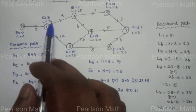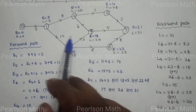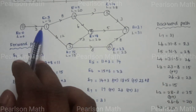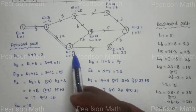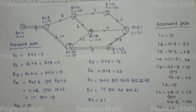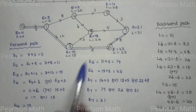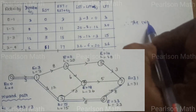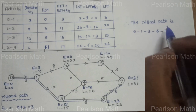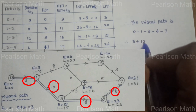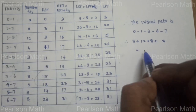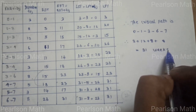Now let's look at the critical path. The critical path occurs where E equals L at each node: E0 equals L0 equals 0, E1 equals L1 equals 3, E3 equals L3 equals 15, E6 equals L6 equals 23, E7 equals L7 equals 31. So the critical path is 0 to 1, 1 to 3, 3 to 6, 6 to 7. The project duration is 3 plus 12 plus 8 plus 8 equals 31 weeks.